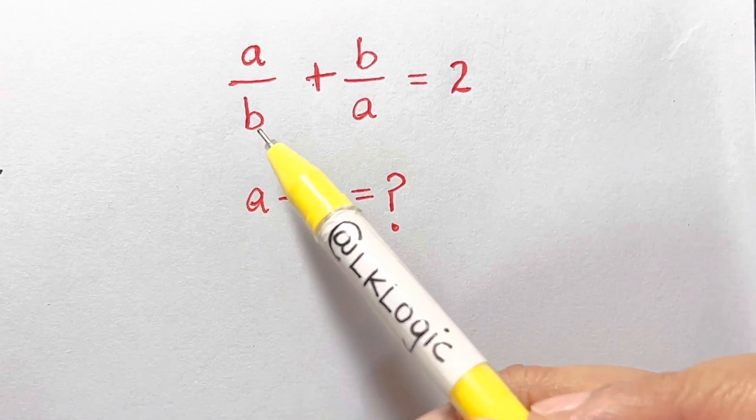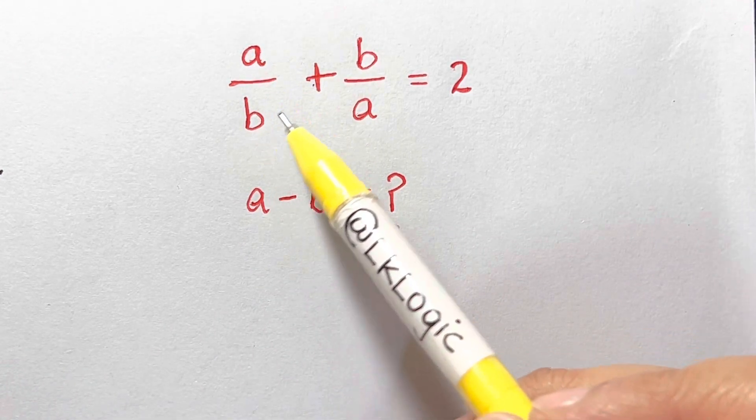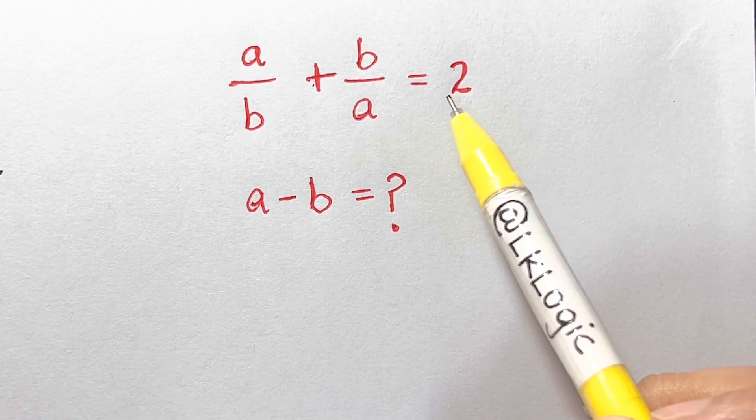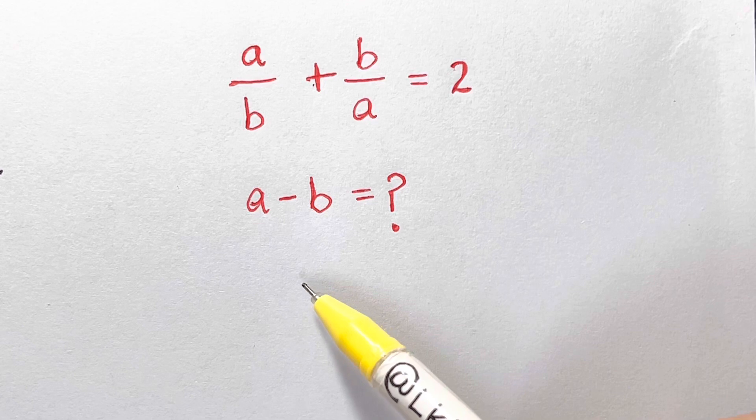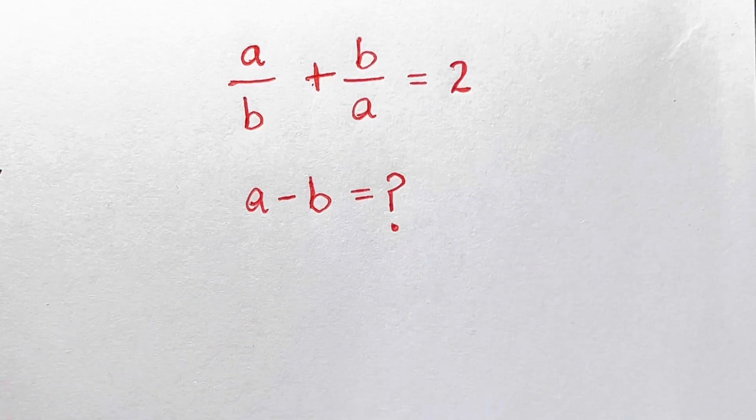Hi guys, here I have a nice problem which is a over b plus b over a equals to 2. What is the value of a minus b? So what do you think, how can we solve this?